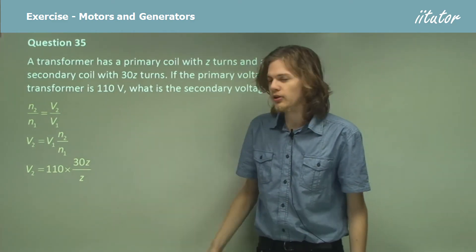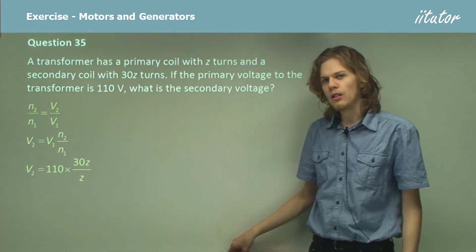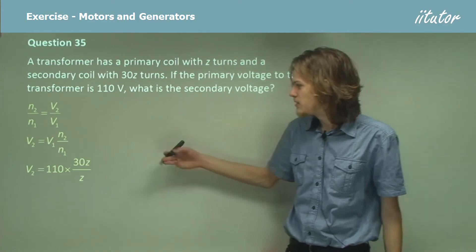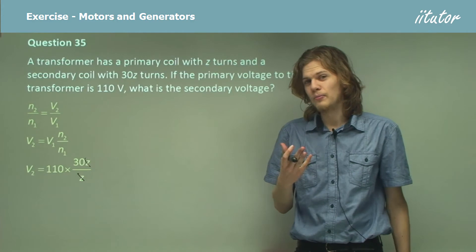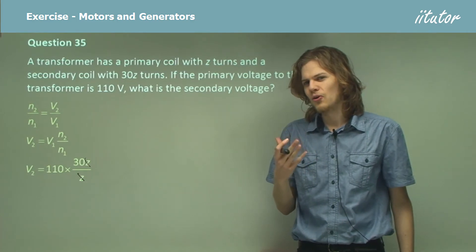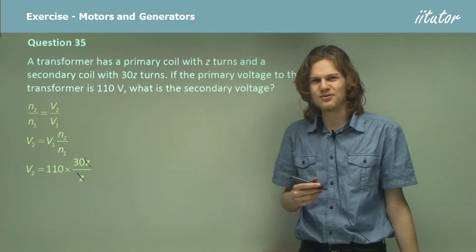So we have 110 volts times 30Z over Z, and look at that! We actually have the Z canceling out. The exception to this is if the Z is zero, but if we have zero coils, then it isn't really a transformer, is it now?